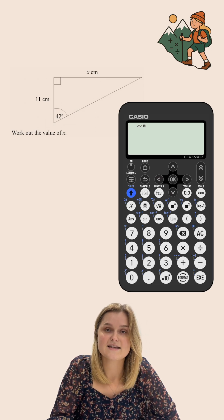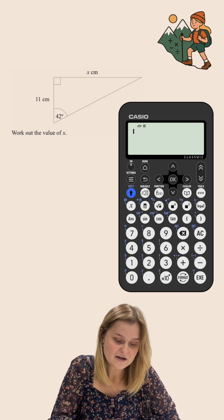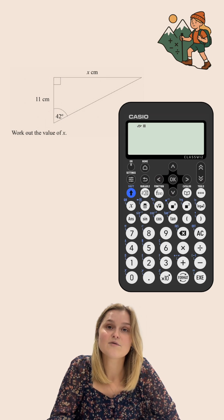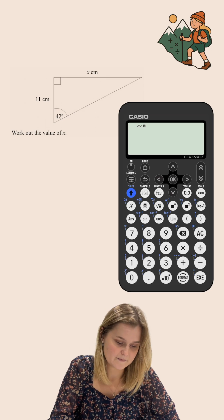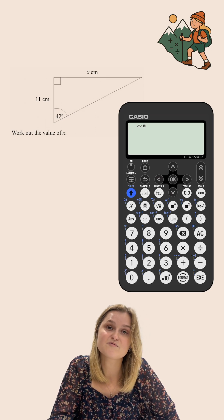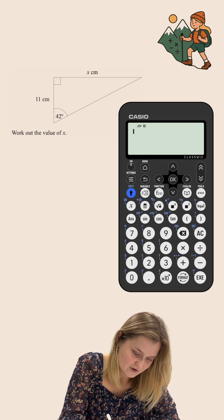Now I cannot use Pythagoras' theorem for this question because I only know one of the side lengths. In order to use Pythagoras you have to know two of the side lengths and just be missing one of them. So for this question I'm going to use right angle trigonometry or SOHCAHTOA.